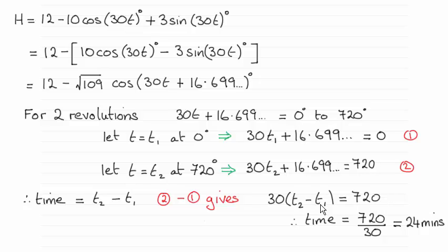So I'm looking for t2 minus t1, so dividing both sides by 30 just leads me to the answer 24 minutes.